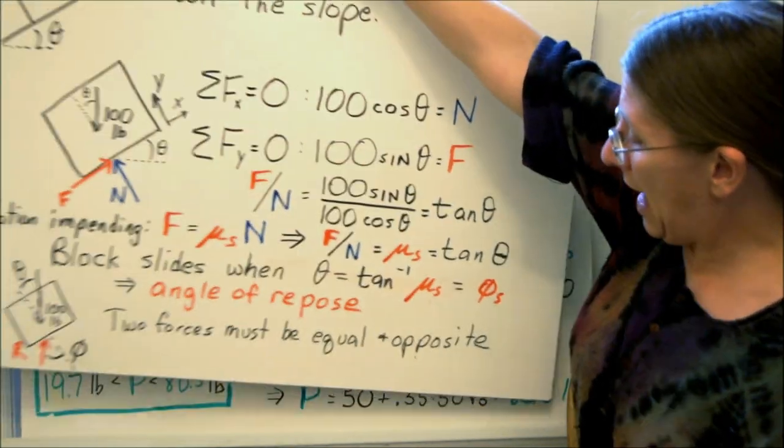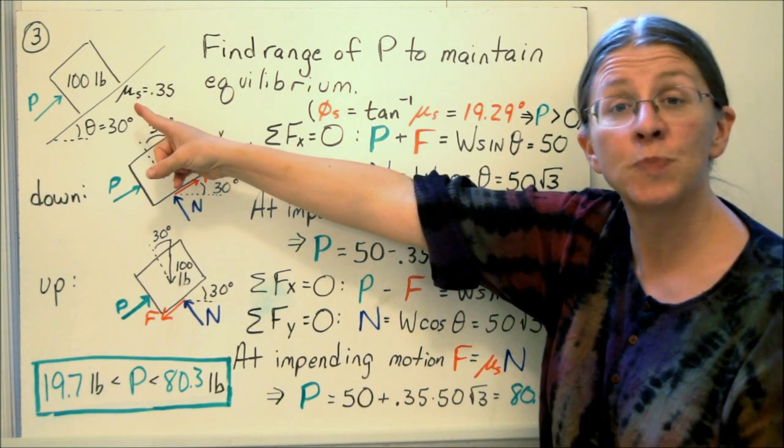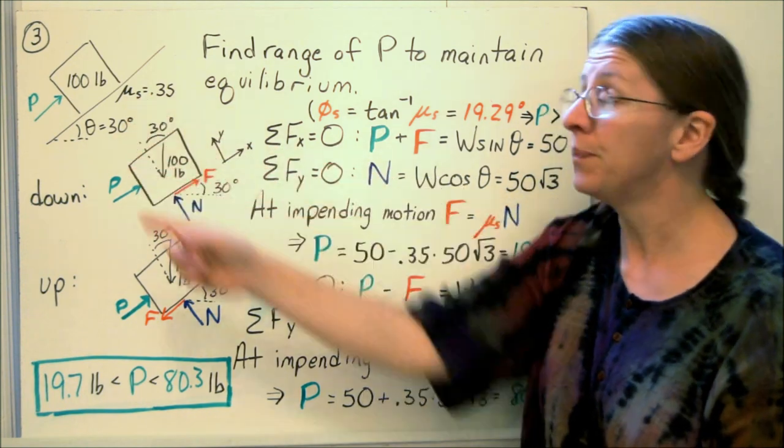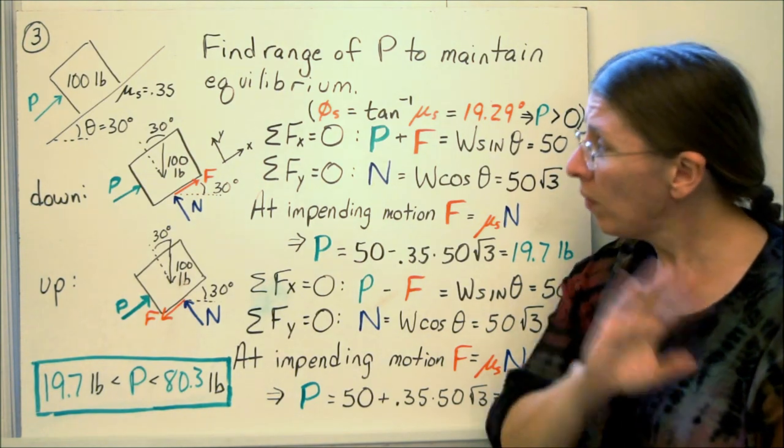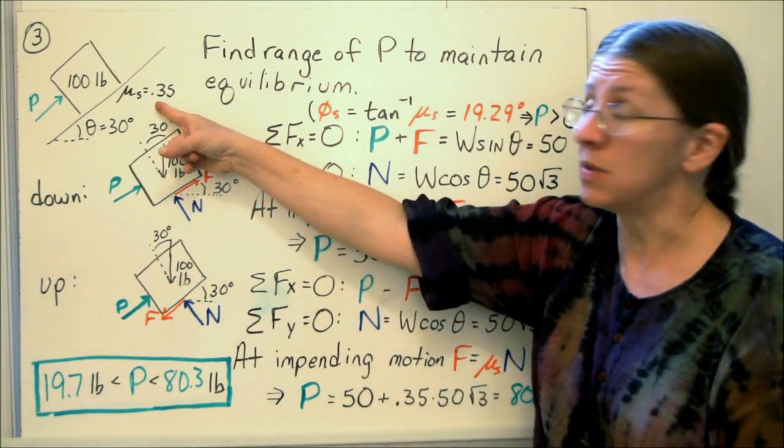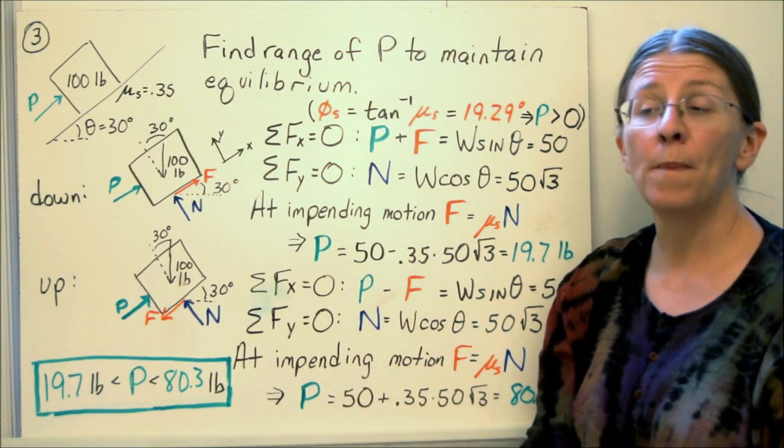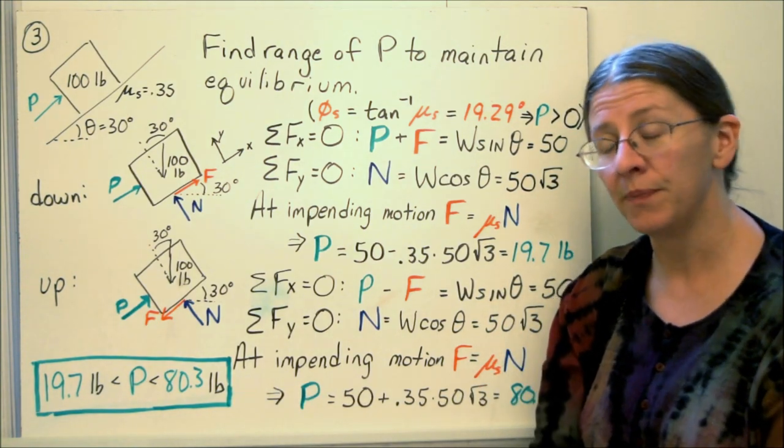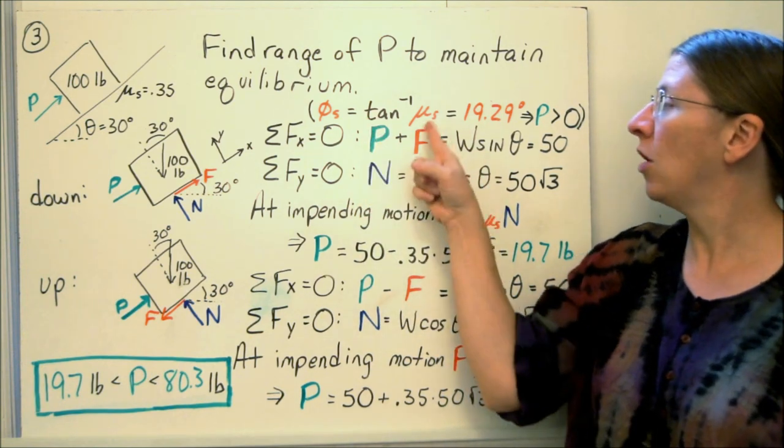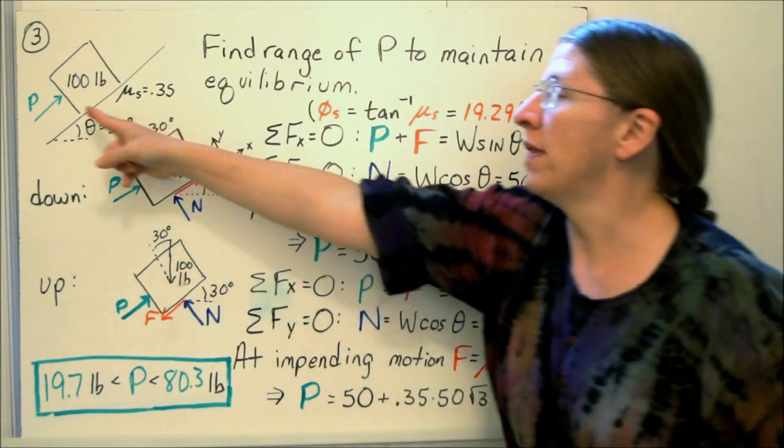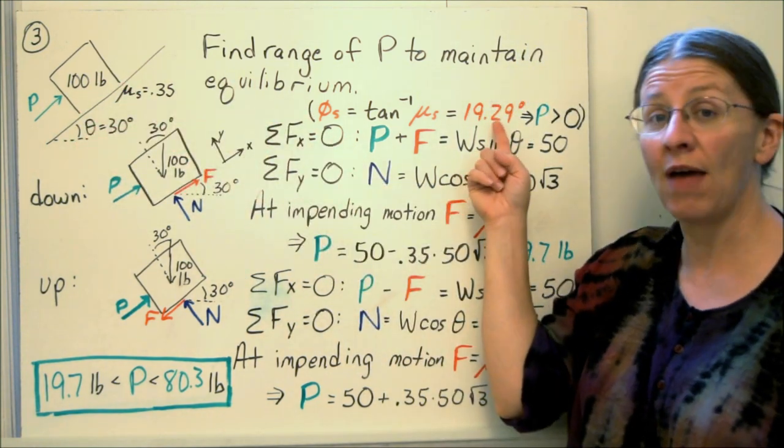So the last example says what happens if I'm pushing on it, if I have a force p. If I have a force p, I want to find the range of p to maintain equilibrium. I'm going to take an actual number here, μs is 0.35, θ is 30 degrees. What p do I have to have to keep the block still? So the first thing to check is the angle of repose. If I take the arc tan of φs, I get 19. That means without a p, that block slides down, because θ is bigger than that angle of repose.